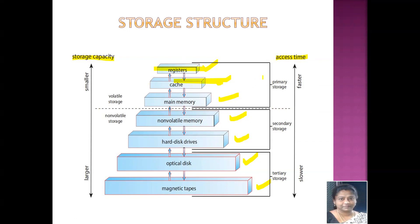The primary memory is comprised of registers, cache memory, and main memory. The secondary memory is comprised of non-volatile memory and hard disk drives. The tertiary memory consists of optical disk and magnetic tapes, which are external devices attached to the system. That covers the storage structure.